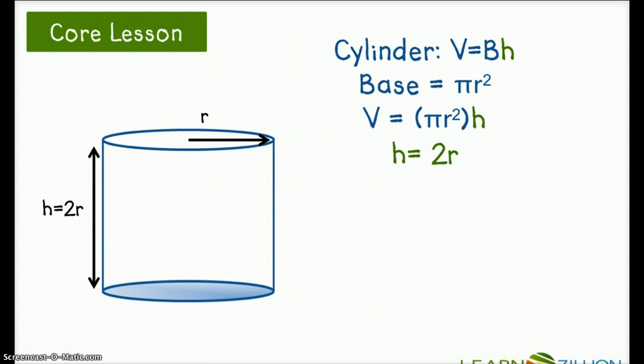We know that h equals 2r. We can write the formula for volume, substituting the 2r for the h. And so now we have volume equals πr² times 2r, or simplified, volume equals 2πr³.